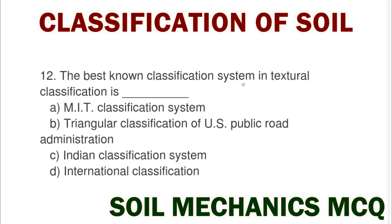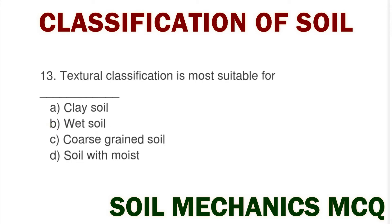Next question: the best known classification system in textural classification is option A MIT classification system, option B triangular classification of US Public Road Administration, option C Indian classification system, option D international classification system. The correct answer is the triangular classification of US Public Road Administration.